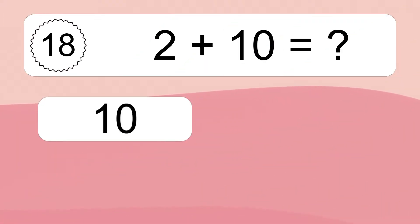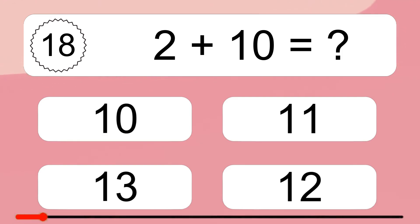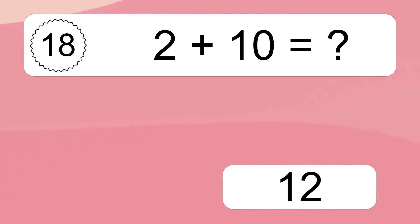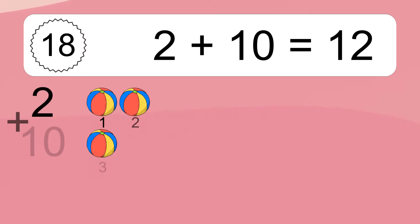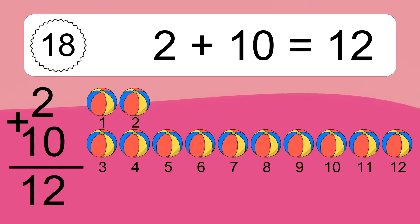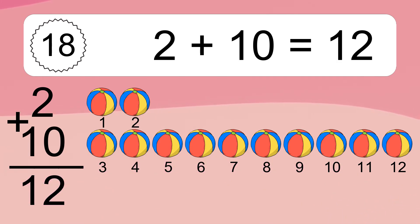2 plus 10 equals what? 2 plus 10 equals 12. Let's count it: 1, 2, 3, 4, 5, 6, 7, 8, 9, 10, 11, 12.